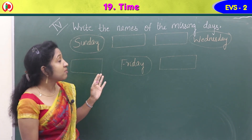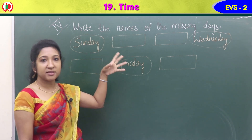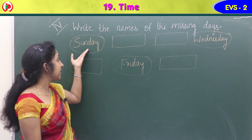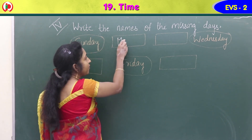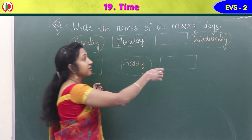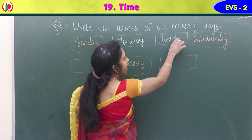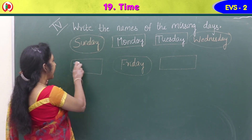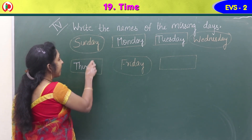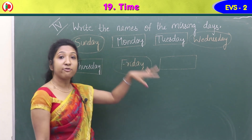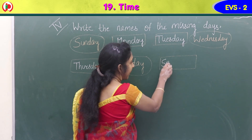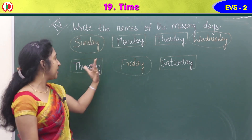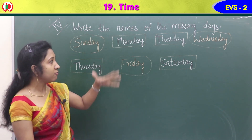The next exercise is exercise 4: write the names of the missing days. Starting from Sunday — Sunday is there, then Monday (M-O-N-D-A-Y), after Monday comes Tuesday (T-U-E-S-D-A-Y), then Wednesday which is given, then Thursday (T-H-U-R-S-D-A-Y), then Friday which is given, and after Friday comes Saturday (S-A-T-U-R-D-A-Y).